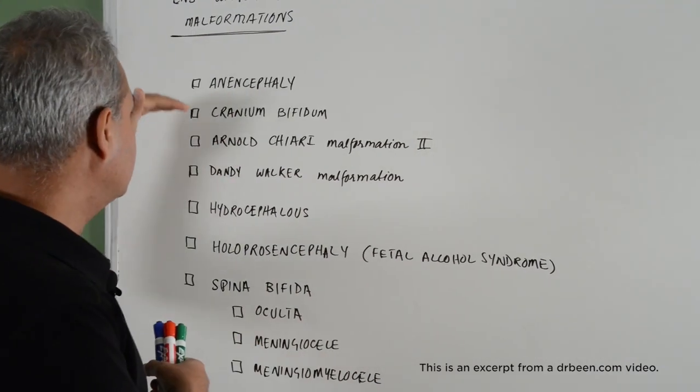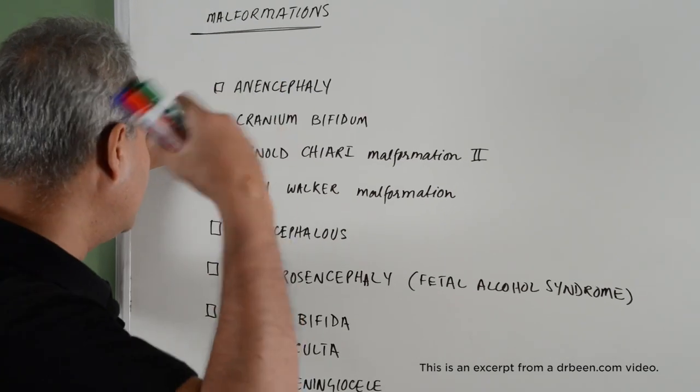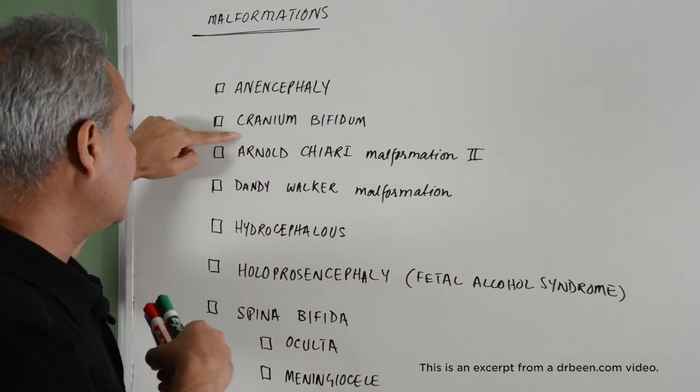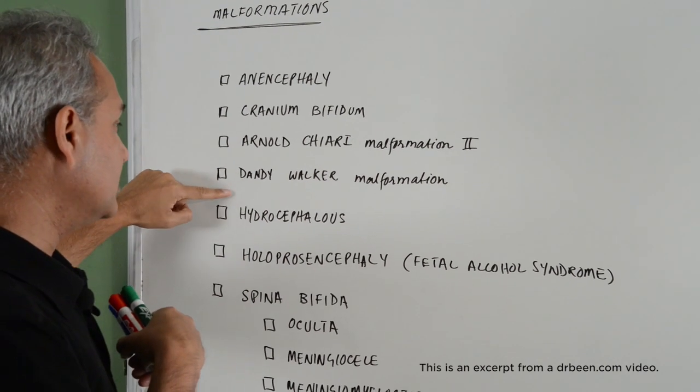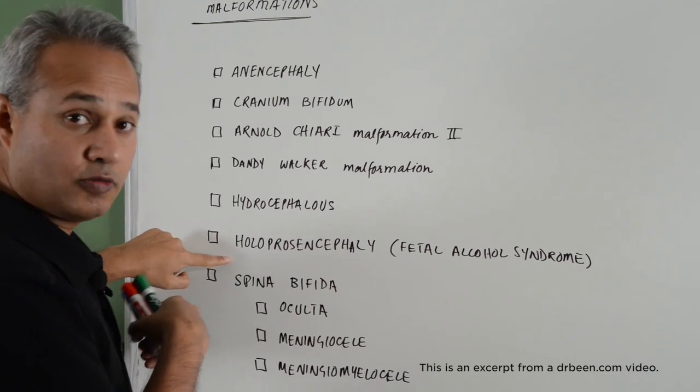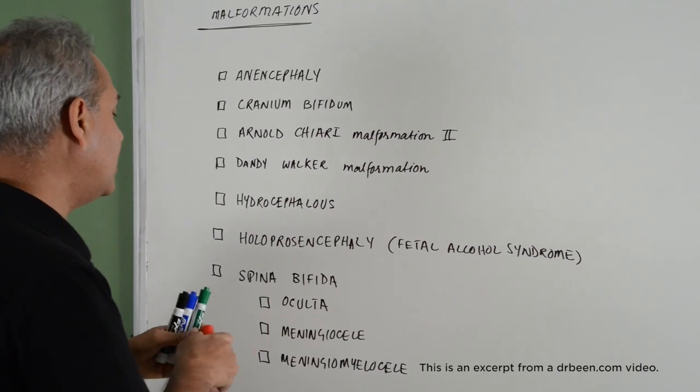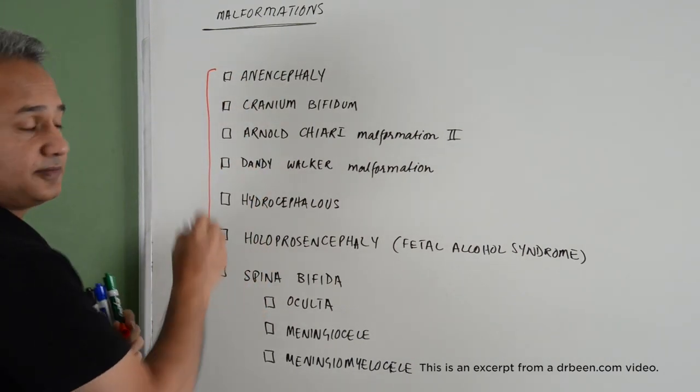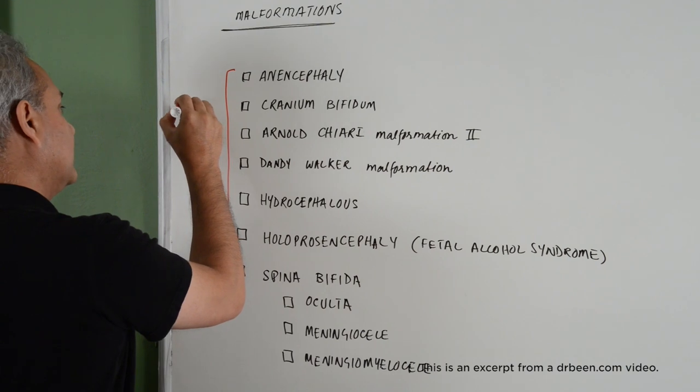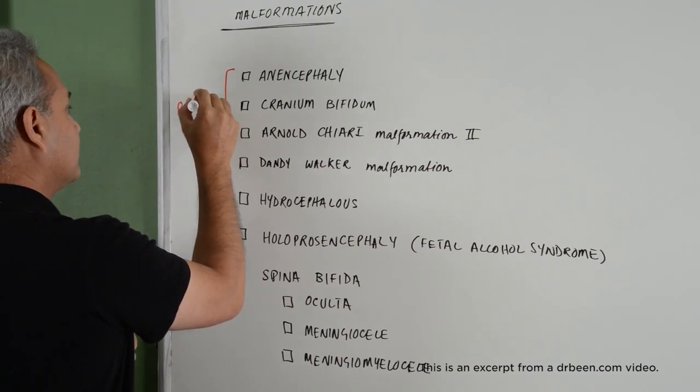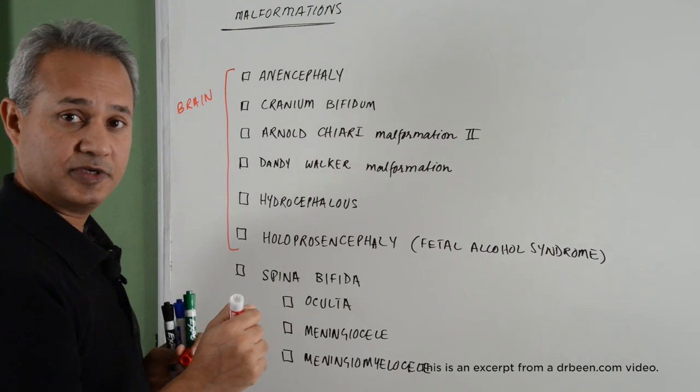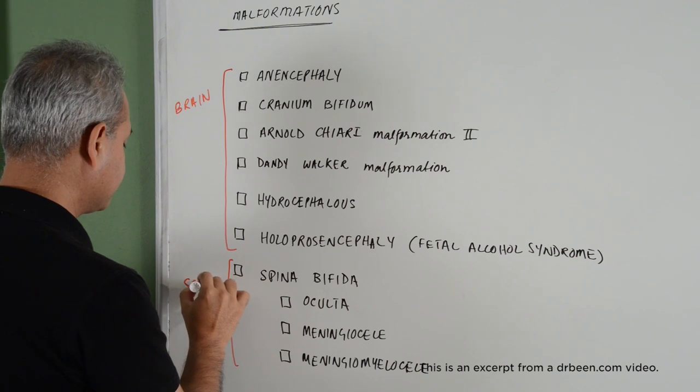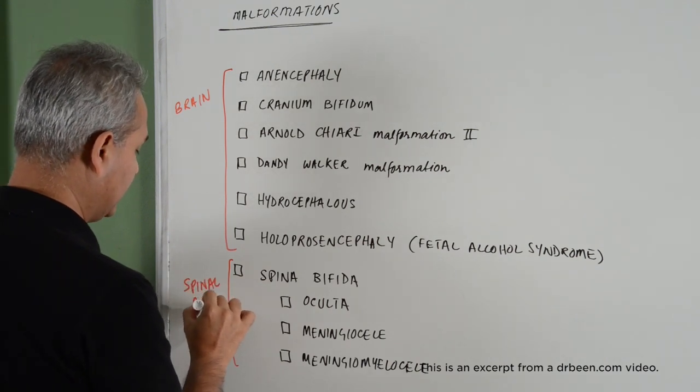The cranial region: anencephaly, absence of the cerebral cortexes or brain area, cranium bifidum, Arnold-Chiari malformation, Dandy-Walker, hydrocephalus. All of these are cerebral or higher brain area malformations. And then spina bifida are the spinal cord. That is one way of looking at it.